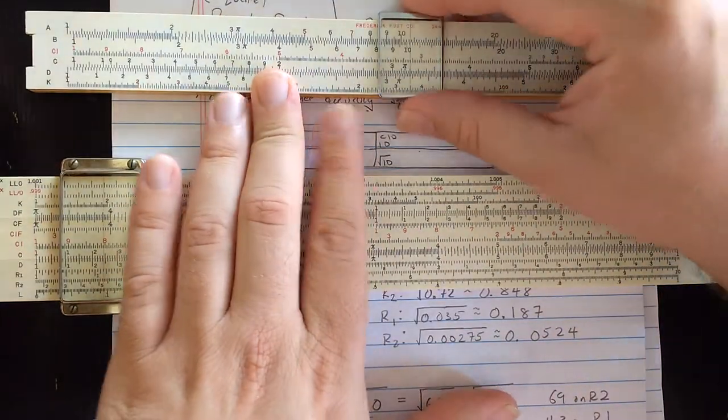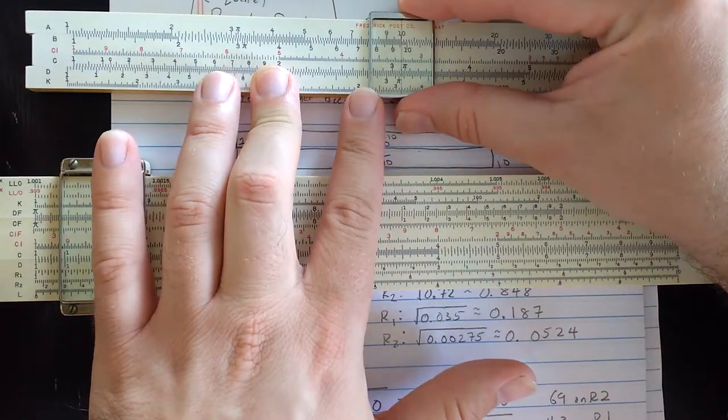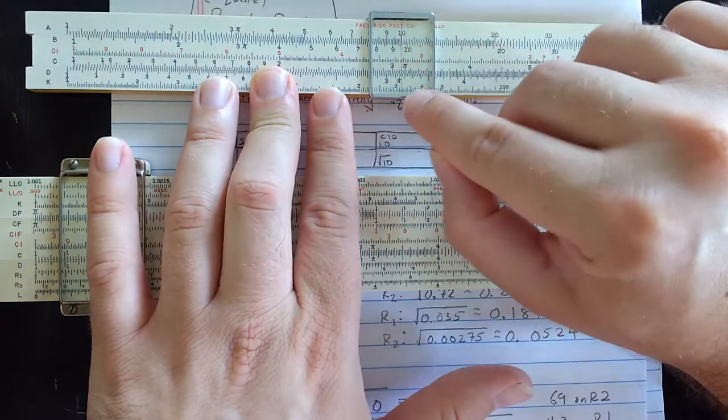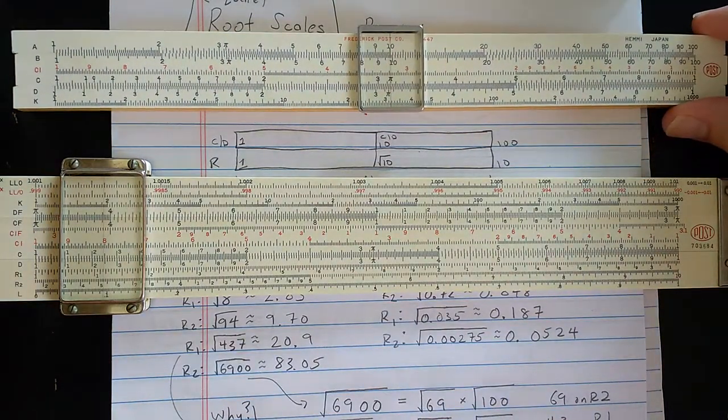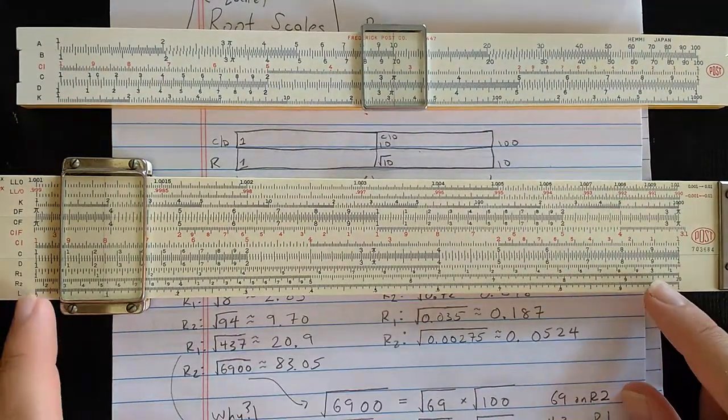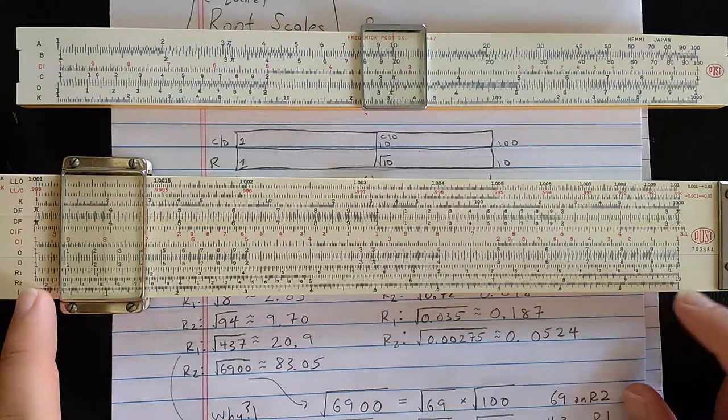So you can see R1 starts at 1 and goes up a little past 3. That's actually the square root of 10 where it ends. That's actually at the middle of the normal slide roll. So you set 10 there, square root 10 on D. That's exactly the middle of the scales on the slide roll.